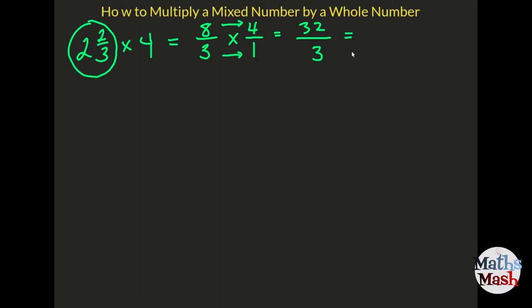And then we can turn that back into a mixed number if we need to, just by saying how many times does 3 go into 32. Well, it goes in 10 times. That would give us 30 and 2 left over.